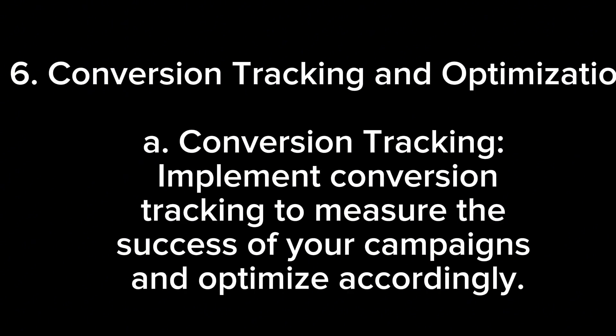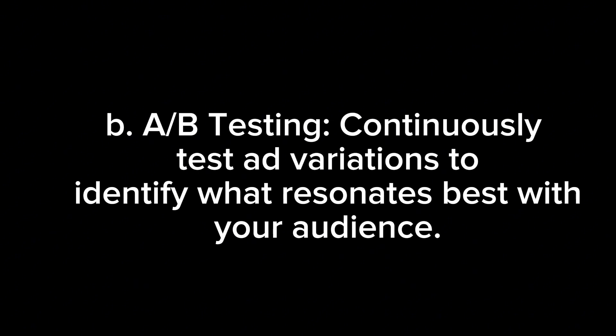6. Conversion Tracking and Optimization. A. Conversion Tracking: Implement conversion tracking to measure the success of your campaigns and optimize accordingly. B. A/B Testing: Continuously test ad variations to identify what resonates best with your audience.